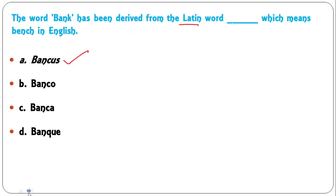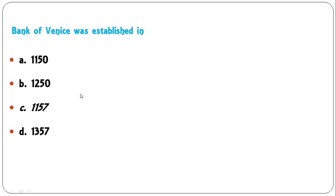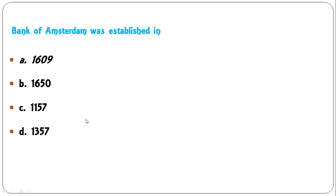Bank of Venice was established in which year — 1150, 1250, 1157, or 1357? The correct answer is 1157. Bank of Amsterdam was established in which year — 1609, 1650, 1157? The correct answer is 1609.